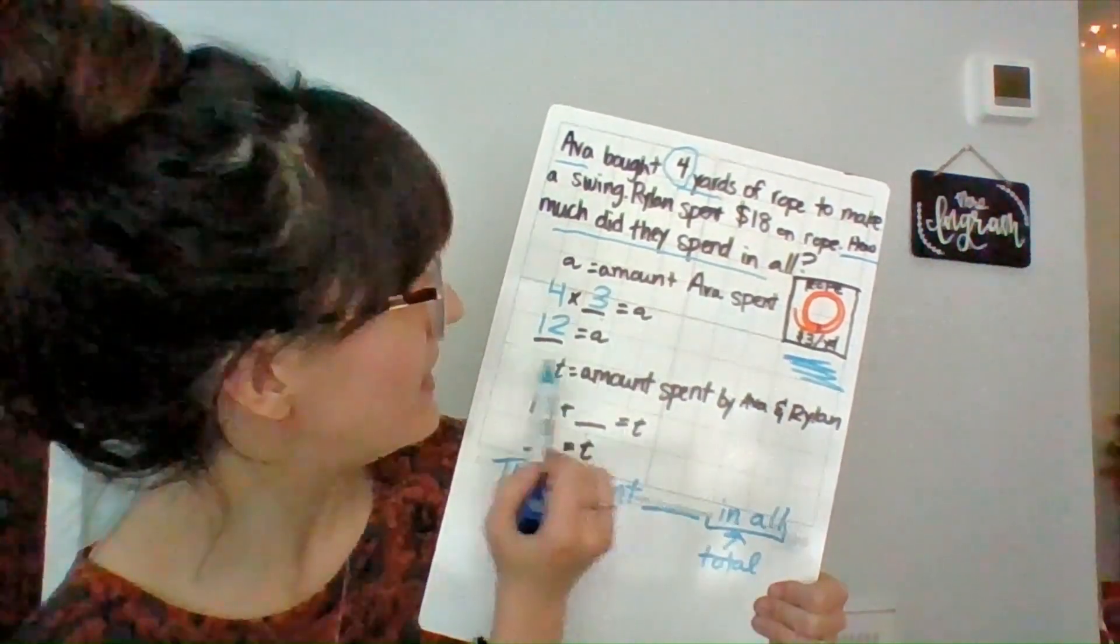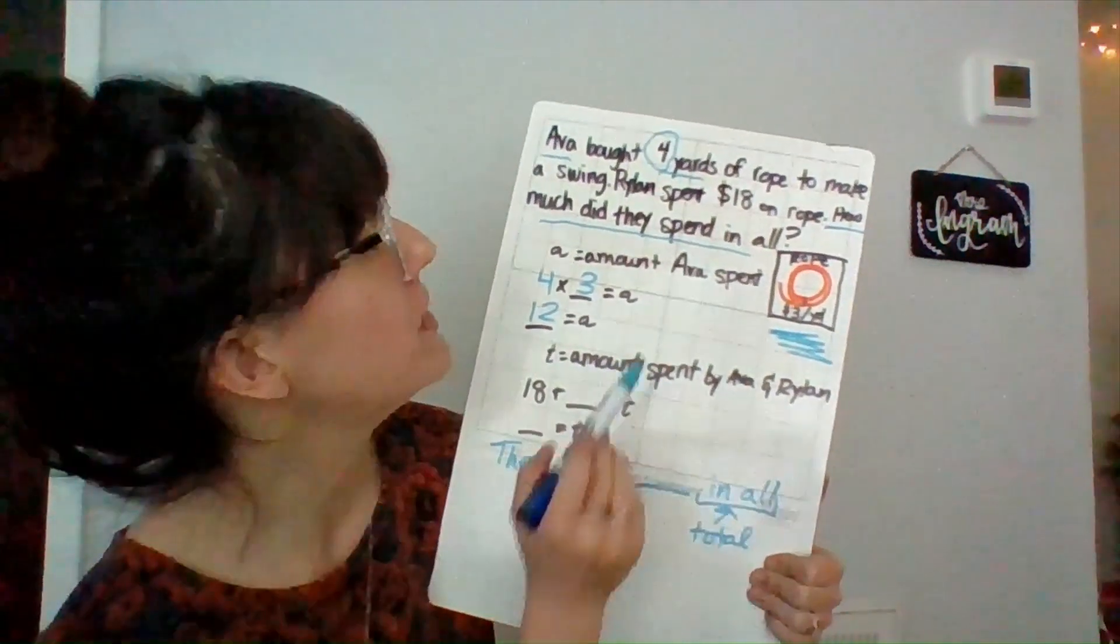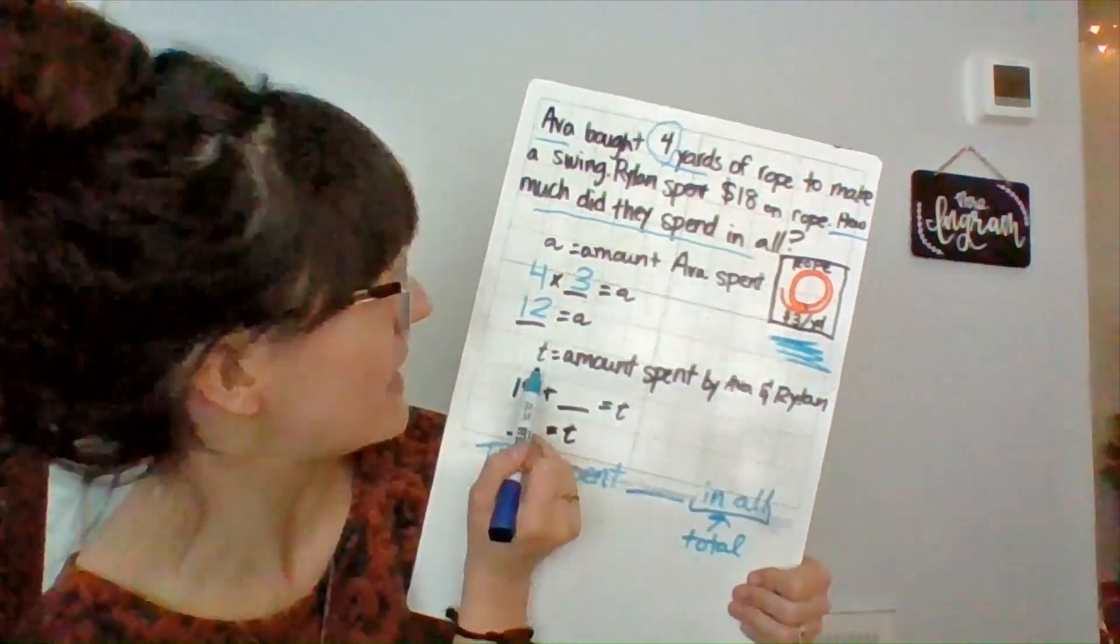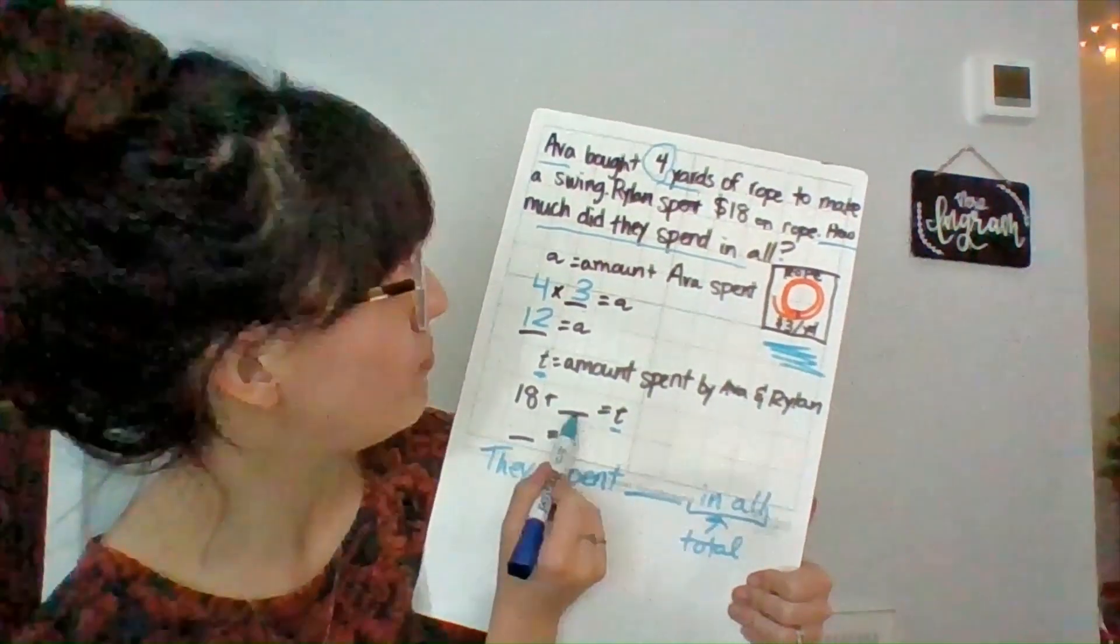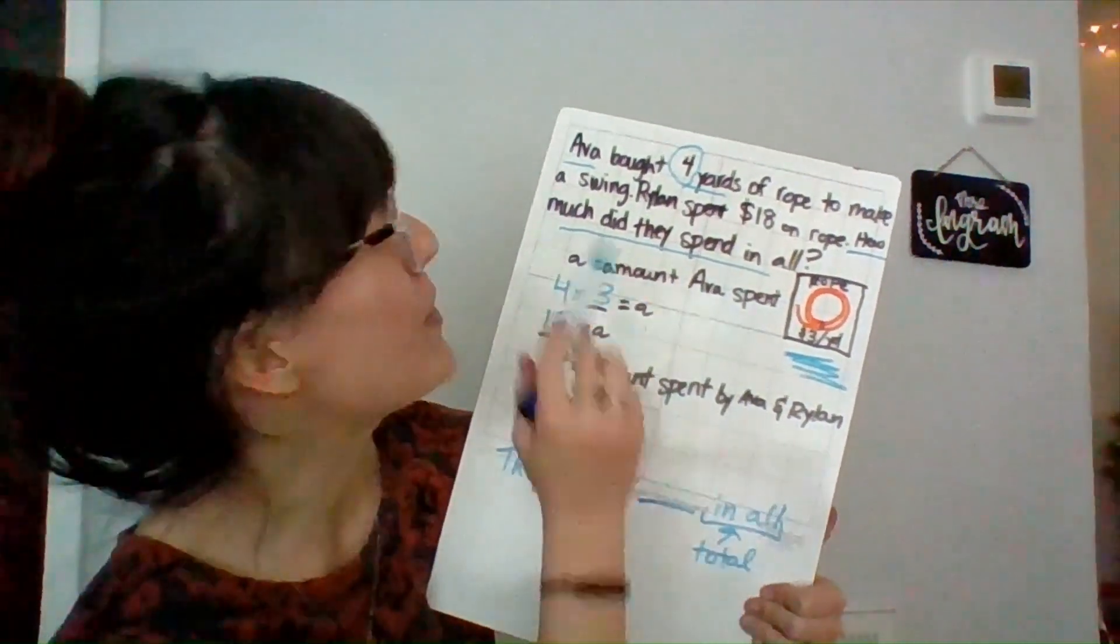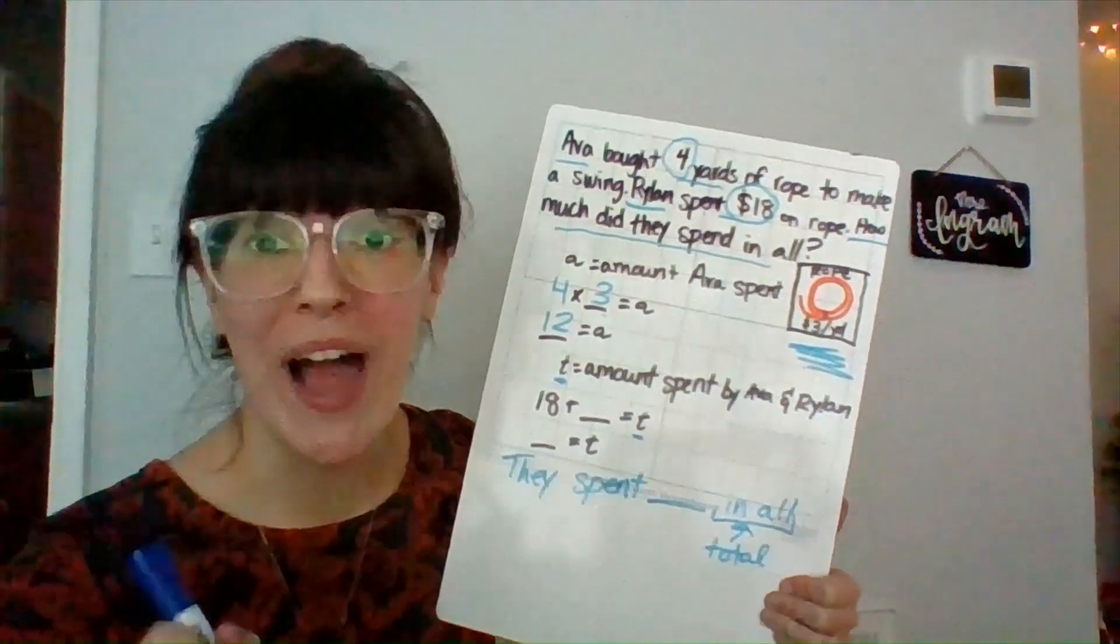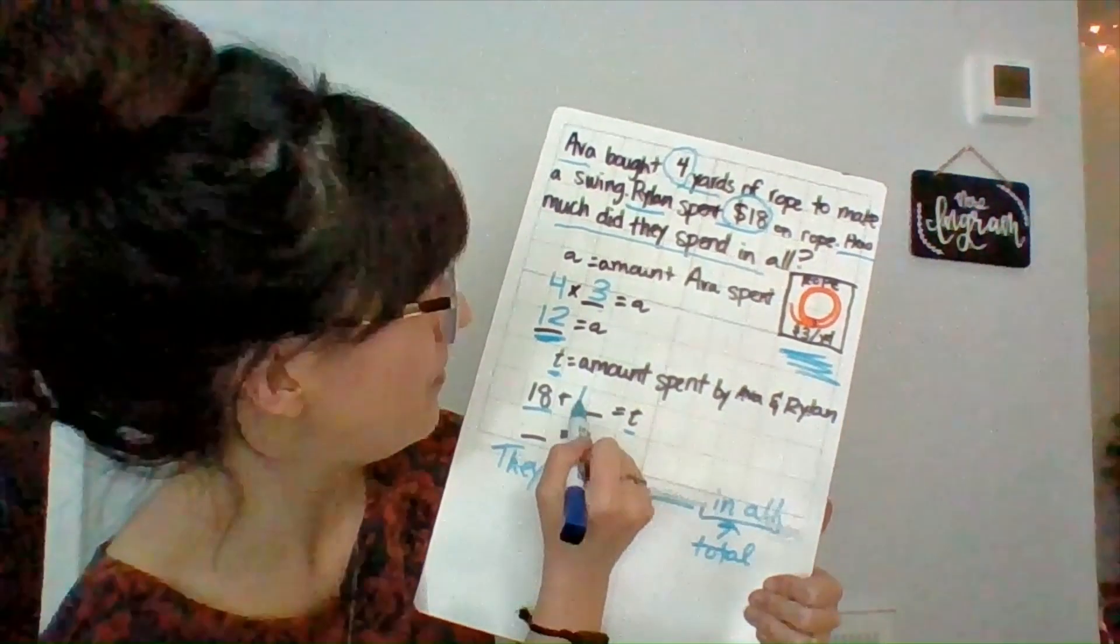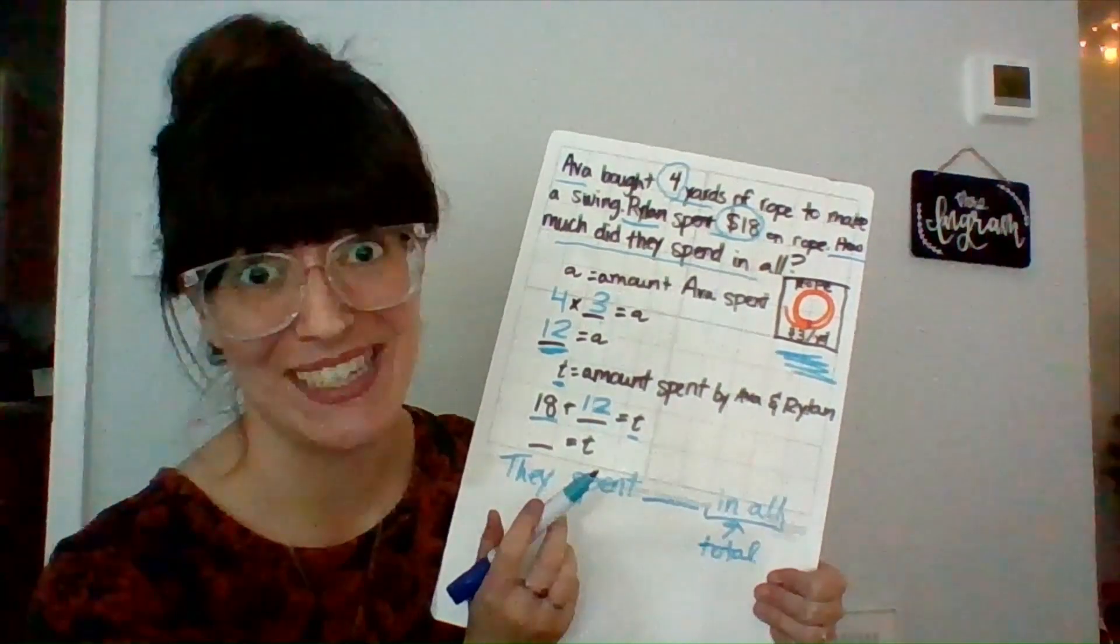So now here for my next step, because remember, the problem didn't say how much did Ava spend? No, no, no, no, no. It said how much did they both spend? So looking for my total amount spent by Ava and Rylan, and that's what my tiny T stands for. Got my tiny T here. 18 plus blank equals T. Now I wonder, where did they get that 18? If I go back to my problem, I see that Rylan spent $18. So that was Rylan's total. So now I'm going to add up Rylan's total plus Ava's total, which we got up here, to equal my total in all. Now I have my second number sentence for me to solve.